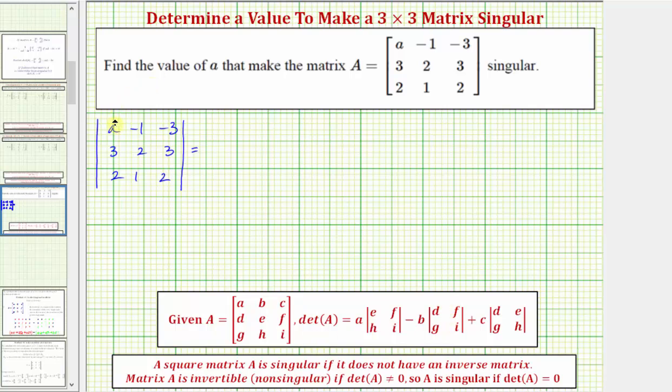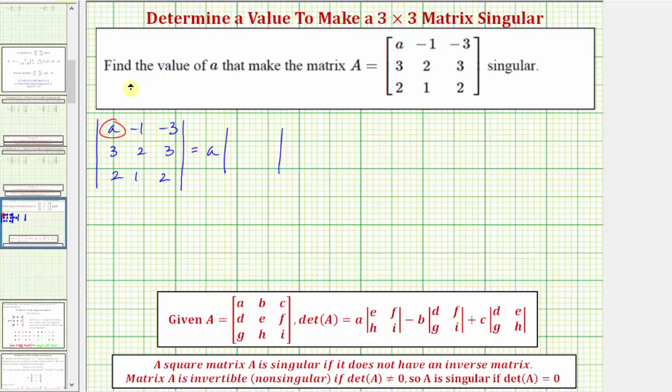So the first element in row one is A. We'll have A times a two by two determinant. To find these elements, we eliminate the row and column of element A. So we eliminate row one, column one. The remaining elements give us this two by two determinant: two, three, one, two.